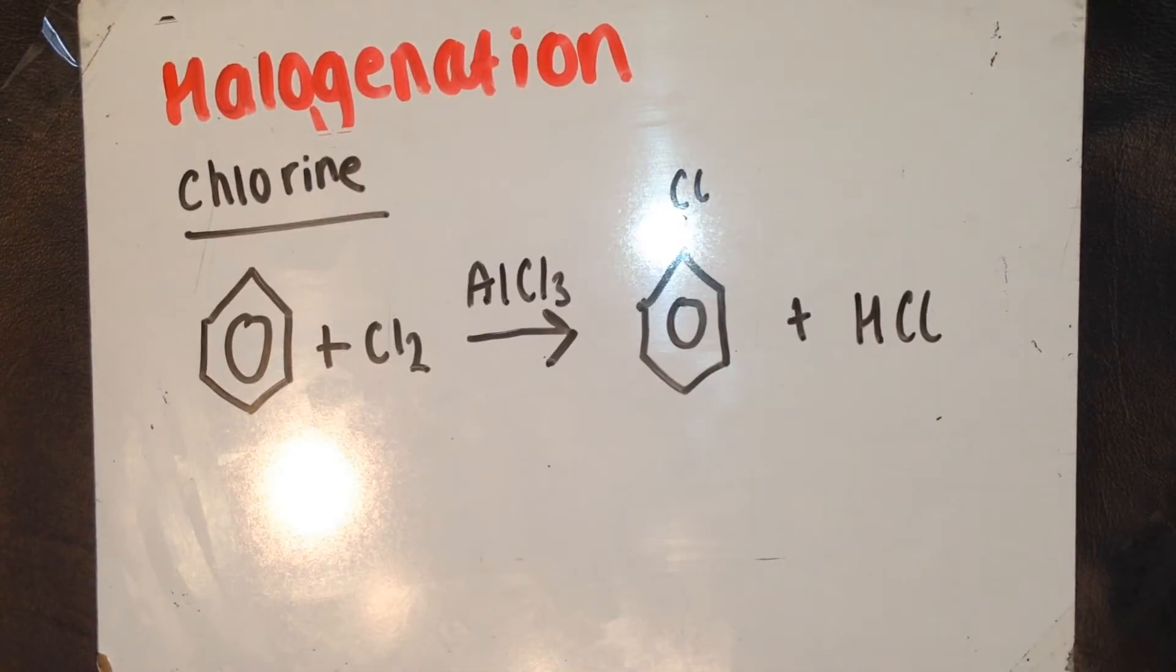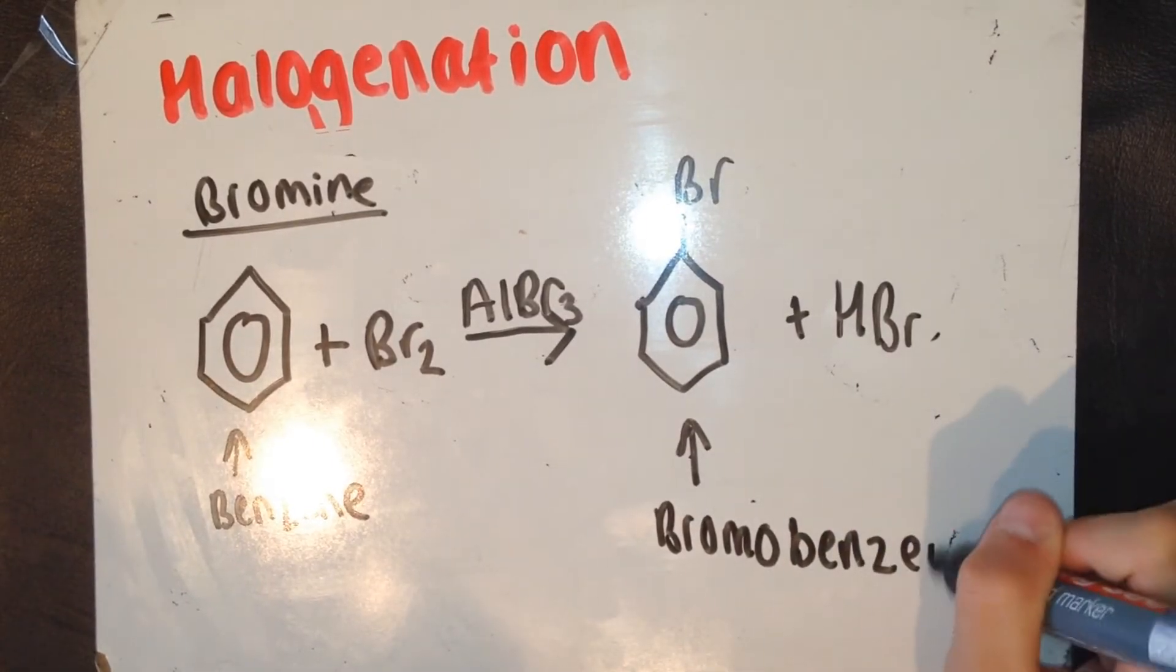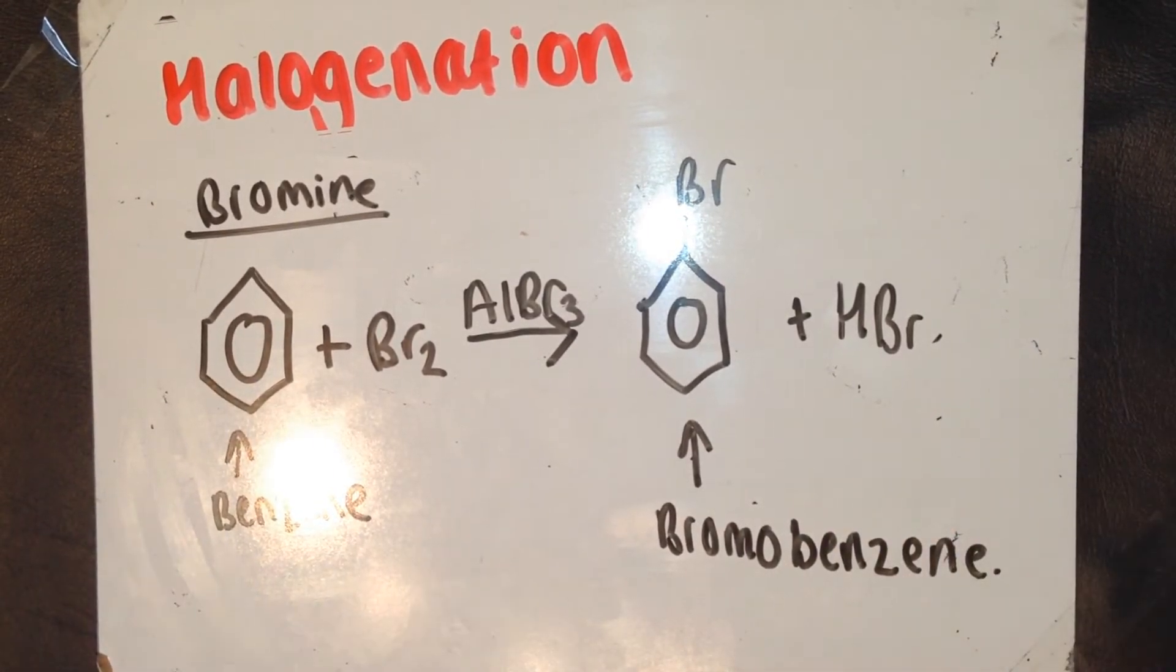For the chlorination of benzene, you've got benzene and chlorine. Under the presence of AlCl3, this gives you chlorobenzene plus HCl. And for the bromination of benzene, it's almost entirely the same, apart from the fact that a different halogen is being used.